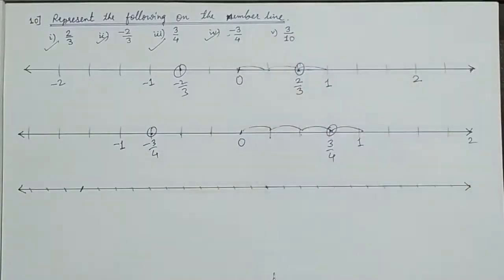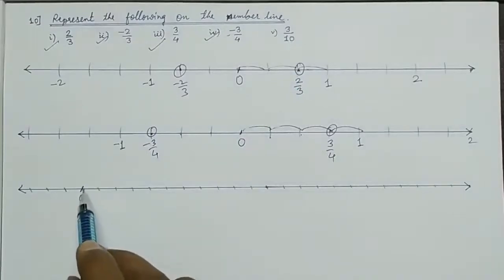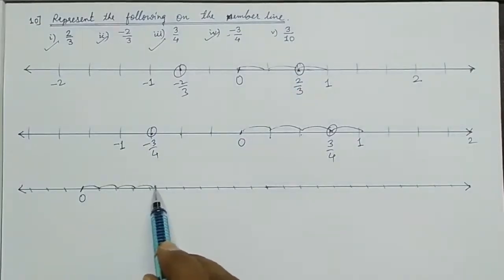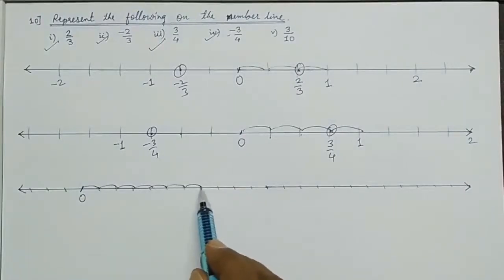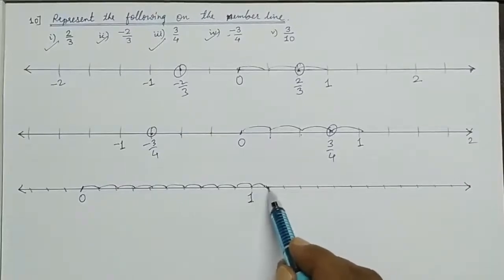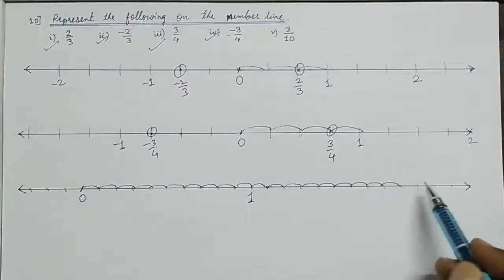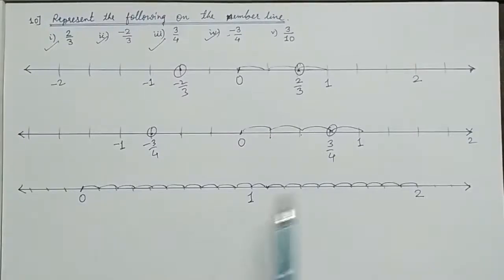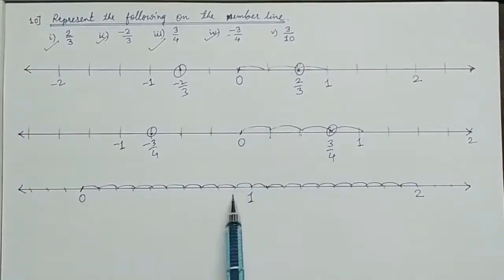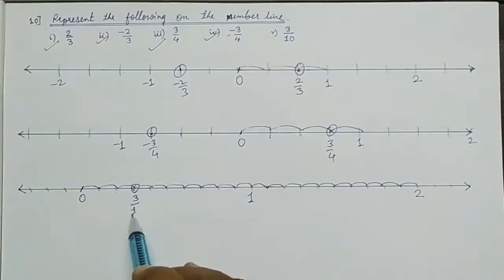Next: 3 by 10. The denominator 10 means we make 10 equal parts of 1 unit. We take 0, then mark 1 through 10 equal divisions to reach 1. Each part is 1 tenth. From 0: 1 upon 10, 2 upon 10, 3 upon 10. So 3 upon 10 is here at the third mark.